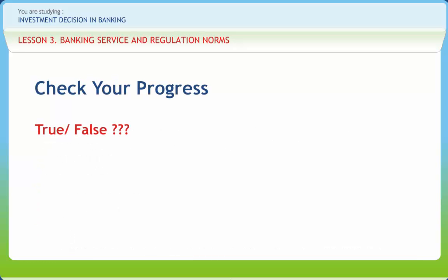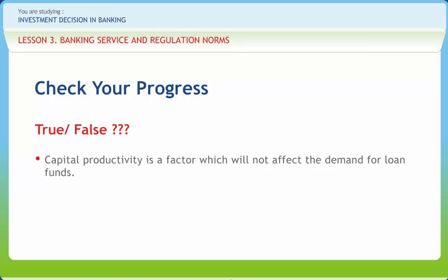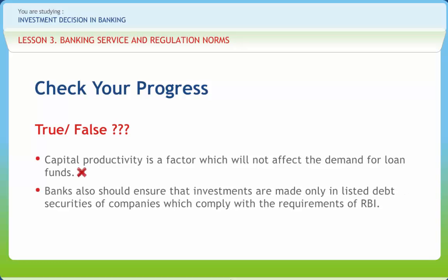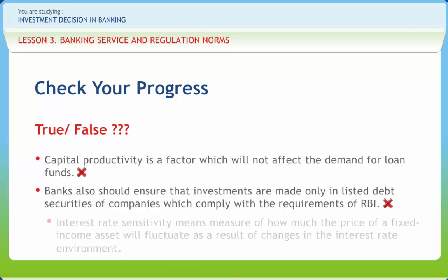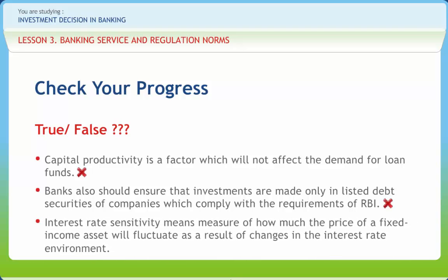Now let's see how much you have learned till now. State whether the following statements are true or false. Statement 1: Capital productivity is a factor which will not affect the demand for loanable funds. Answer: False. Statement 2: Banks should ensure that investments are made only in listed debt securities of companies which comply with the requirements of RBI. Answer: False. Statement 3: Interest rate sensitivity means a measure of how much the price of a fixed income asset will fluctuate as a result of changes in the interest rate environment. Answer: True.